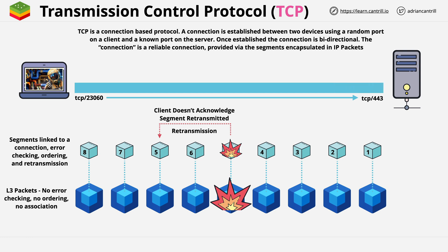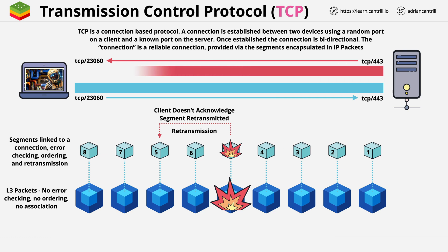TCP connections are bi-directional, meaning the server will send data back to the client. To do this, it just flips the ports in use — the source port becomes TCP 443 on the server, and the destination port on the client is 23060. You can think of these two channels as a single connection between the client and the server. These channels are created using segments, building upon reliable ordered delivery, giving you a stream or channel between two devices over which data can be exchanged.